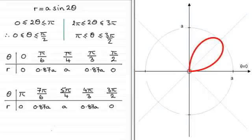So hopefully you can see that when theta equals pi over 6, r is roughly 0.87a. So that's that point, about there. And the same with theta equaling pi over 3 radians, r is equal to 0.87a. About that point there.